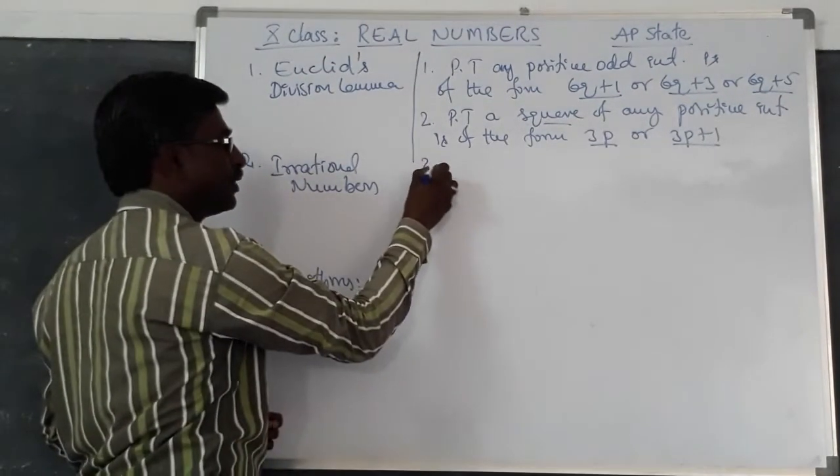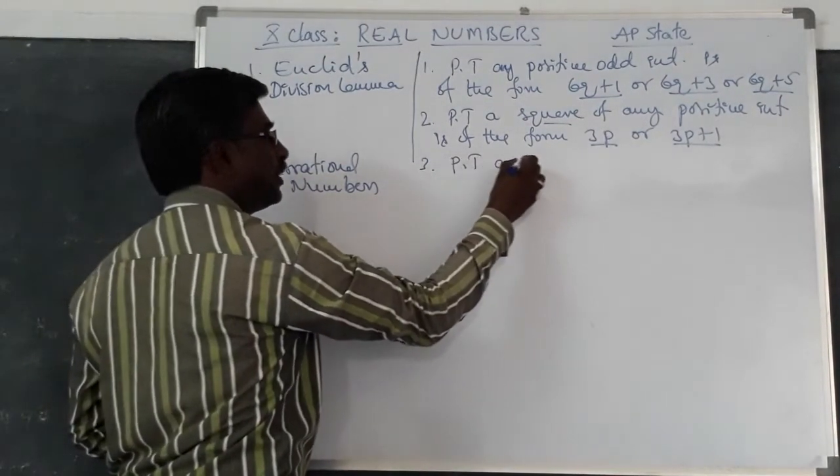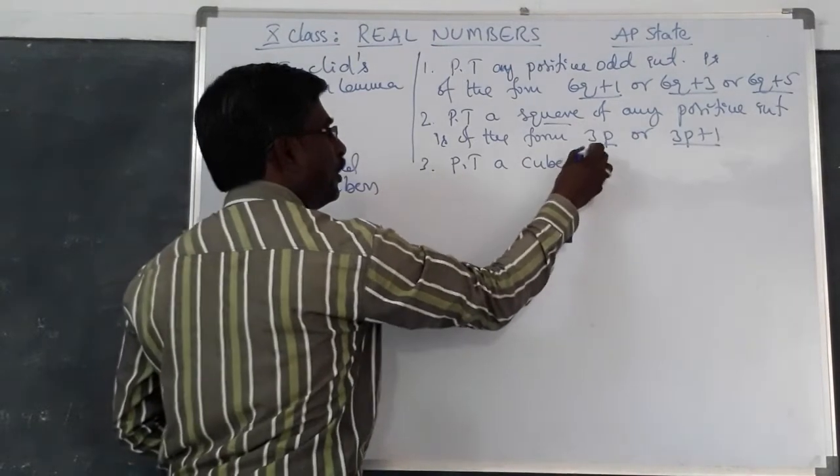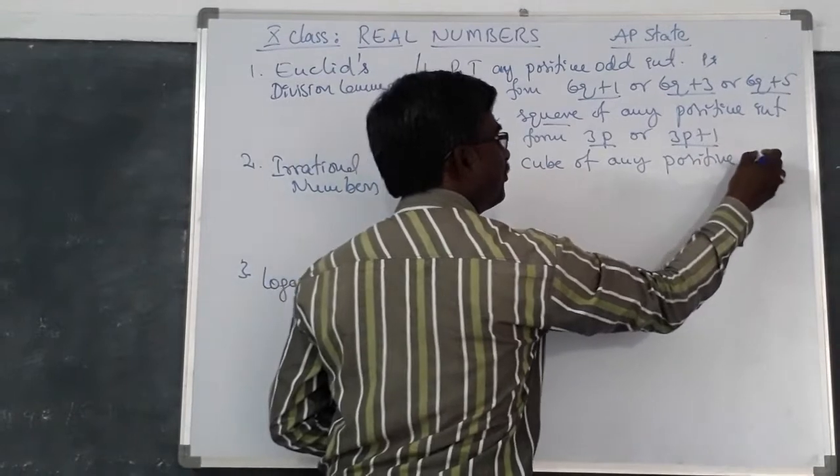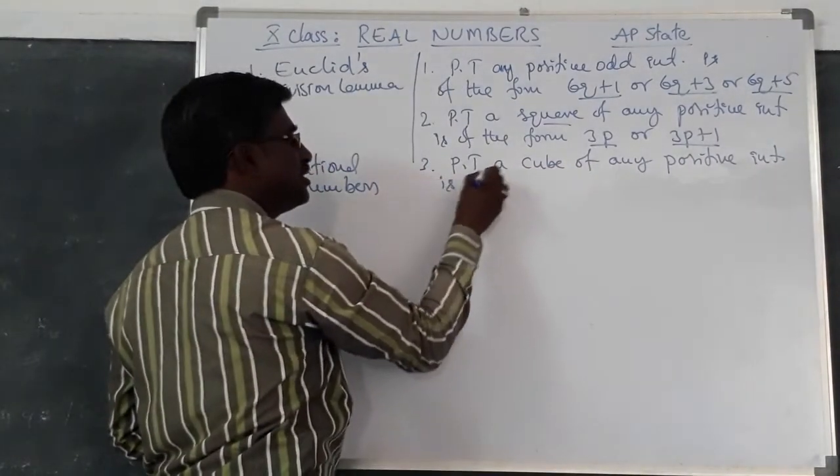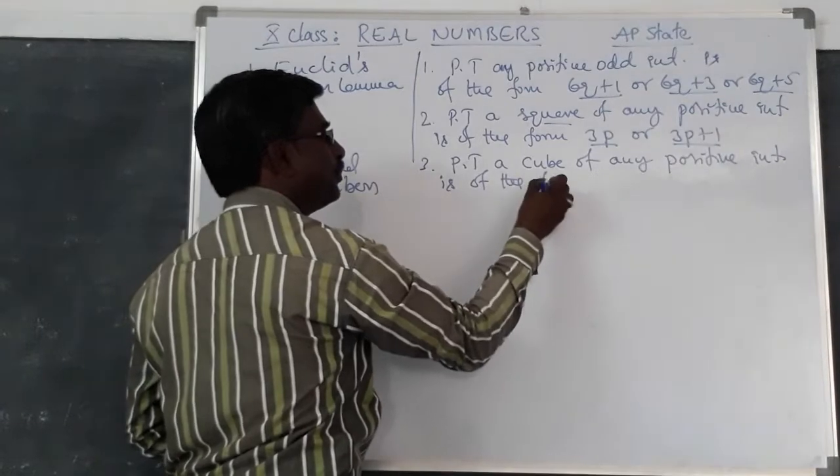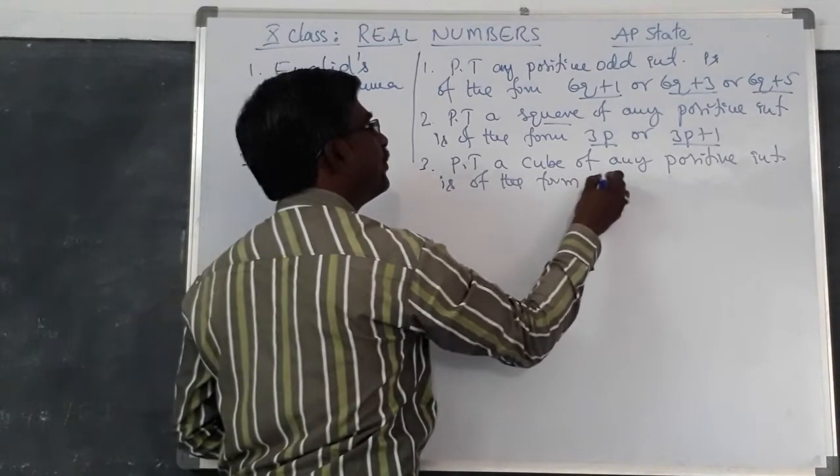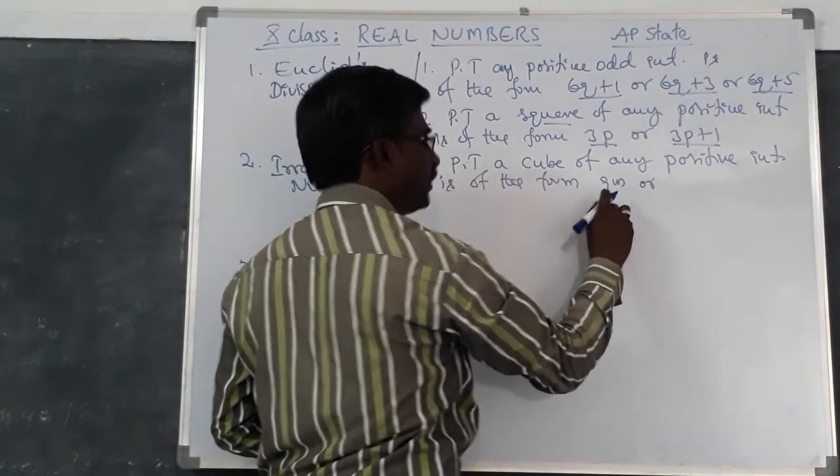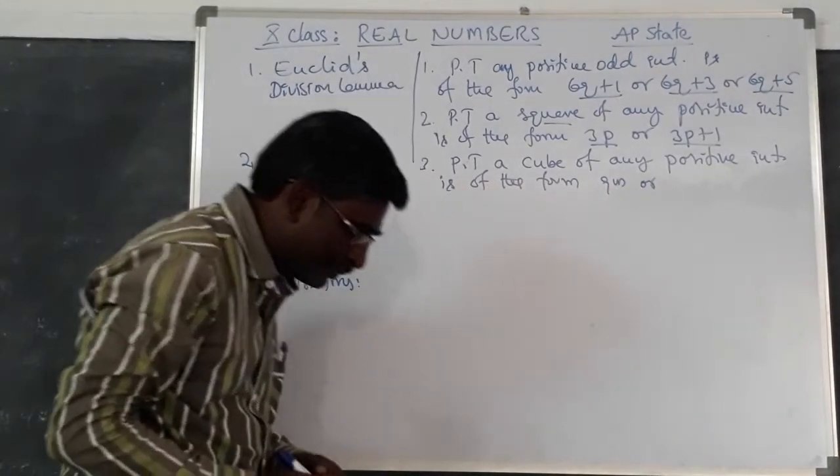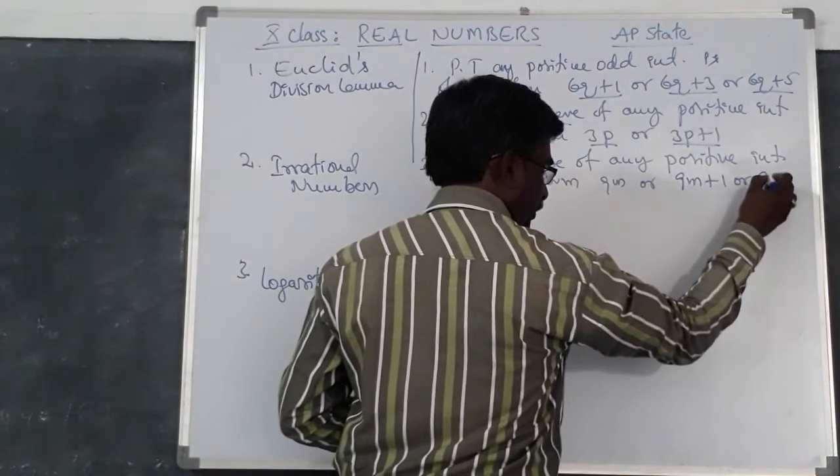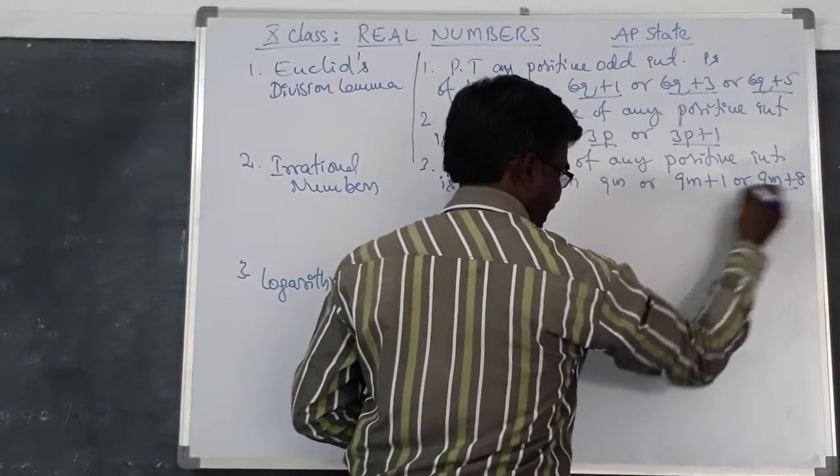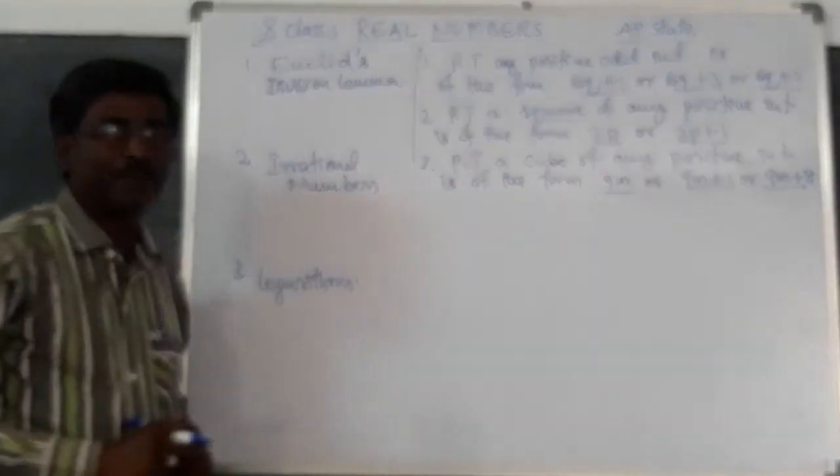And next one, prove that a cube of any positive integer is of the form 9m or 9m plus 1 or 9m plus 8. So these are the main problems of Euclid's Division Lemma according to the real numbers.